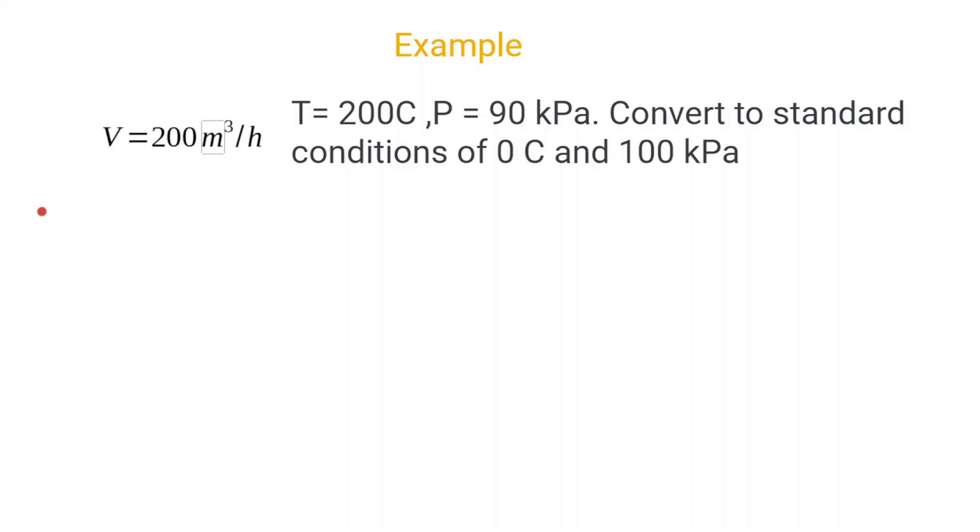Okay, let's run through a quick example. Suppose we have a volumetric flow rate of 200 cubic meters an hour, 200 degrees Celsius stack, 90 kilopascals in the stack. Convert us to standard conditions of 0 degrees Celsius and 100 kilopascals. We will be using our relationship that we just derived.